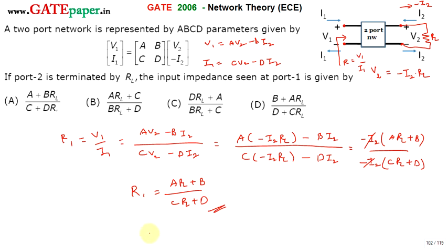So input impedance at port 1 is ARL plus B divided by CRL plus D. So the right option is D. Thank you.